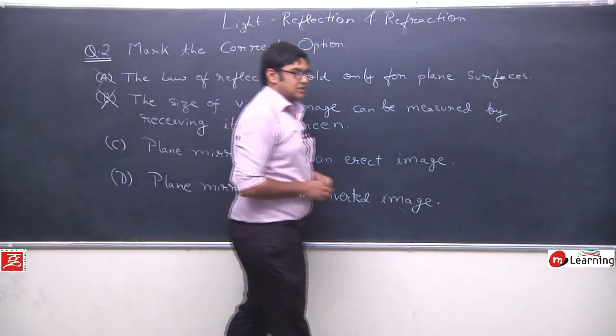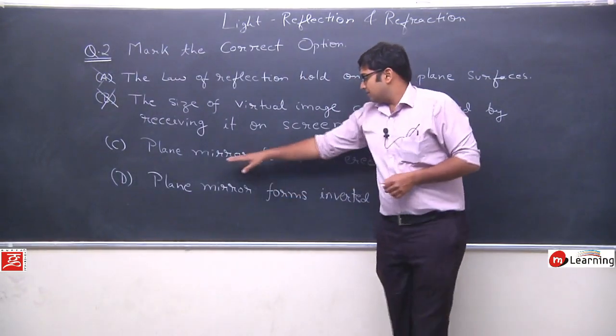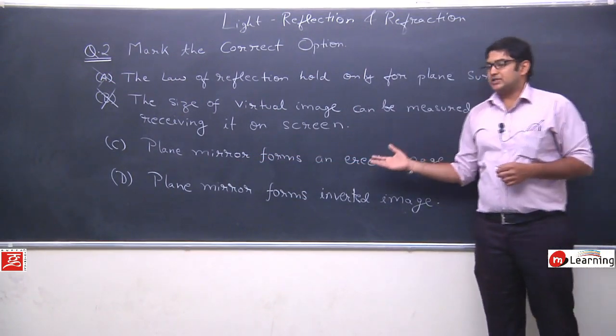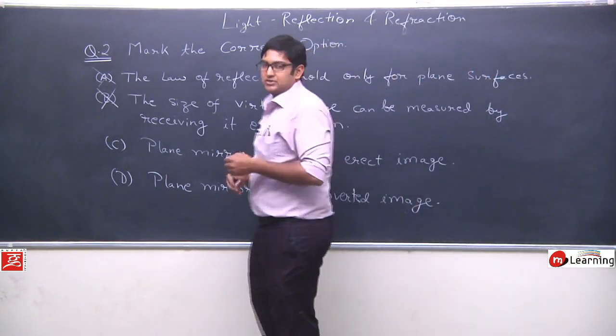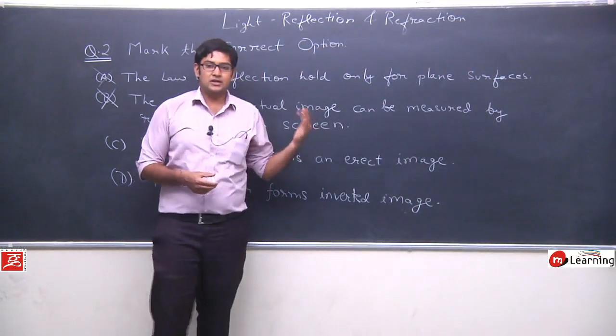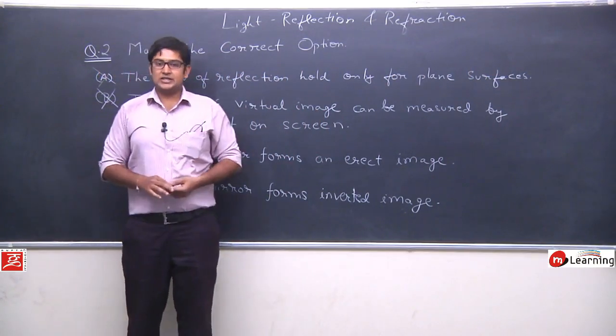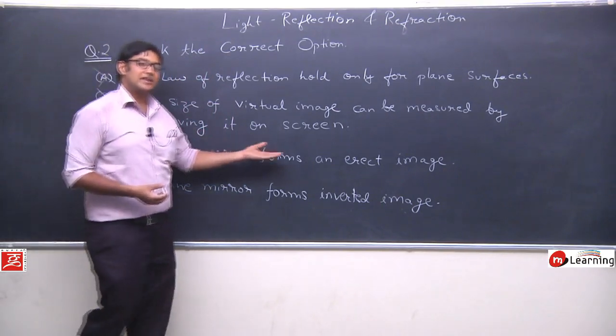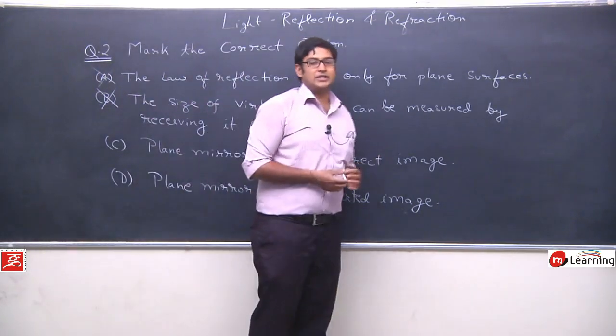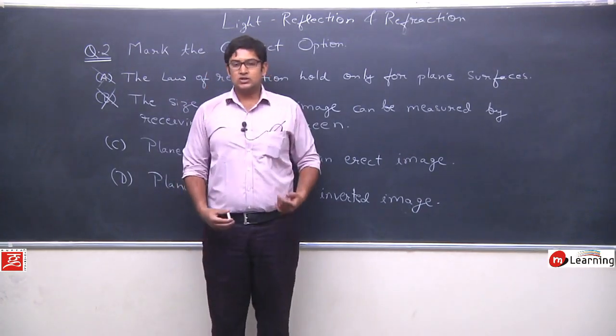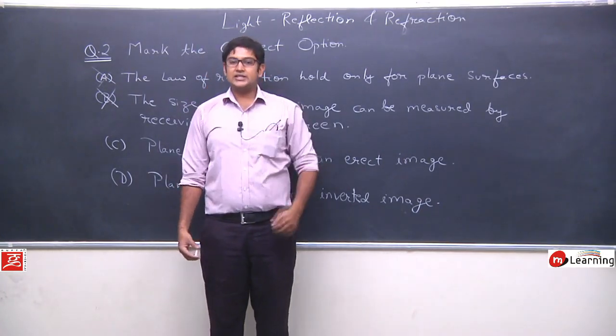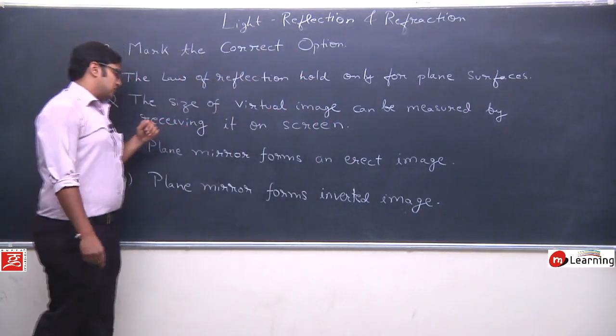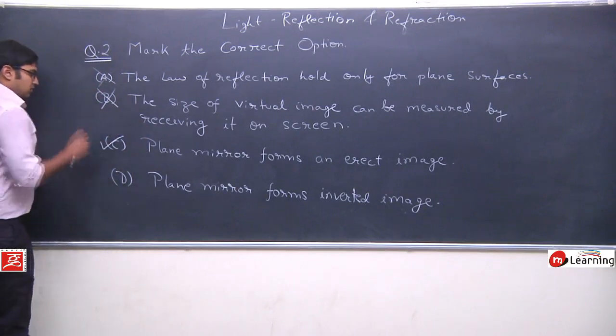Then, third option says, plane mirror forms an erect image. That is very obvious, we have discussed this many times. When we saw single plane mirror, and when we saw multiple reflections, we discussed this. And we know that, yes, the plane mirror forms an erect image. It always forms erect image. Erect means if I stand like this, my image will remain like this. It's not that my head will be down and feet will be up. So, it means, it's an erect image. So, this option is true.